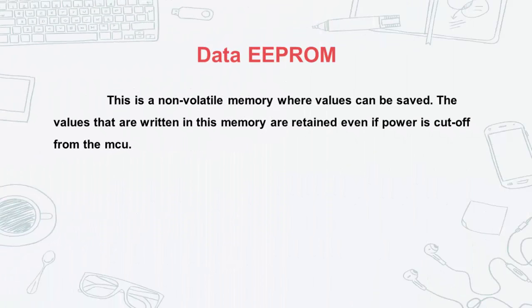Finally, we have the data EEPROM. This memory is also non-volatile, so values saved here will be retained when power is removed. For example, say you wanted to create a digital thermometer that could save the temperature of a room at a particular interval. You cannot save it in RAM because it is volatile — as soon as power is removed, all that information is lost. You also cannot save it in program memory because you cannot write to program memory at runtime. Data EEPROM is created for that purpose: it allows you to save a small amount of data that you can retrieve later, even if power is cut off.